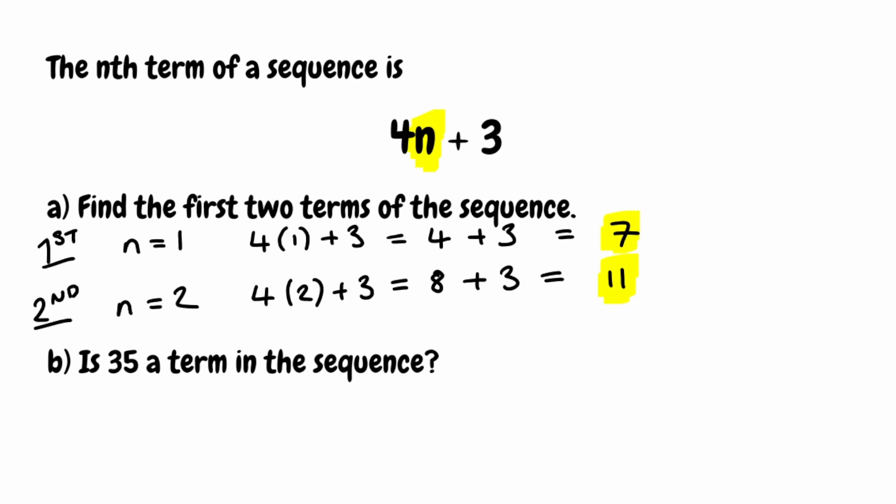For this second part of the question it asks us if 35 is a term in the sequence. We try to find the term number — we want to find the value of n if 35 would be in the sequence. We set up an equation: the nth term is 4n plus 3, and we want to know if this equals 35. Remember, our value for n, if it's in the sequence, must be an integer — a whole number.